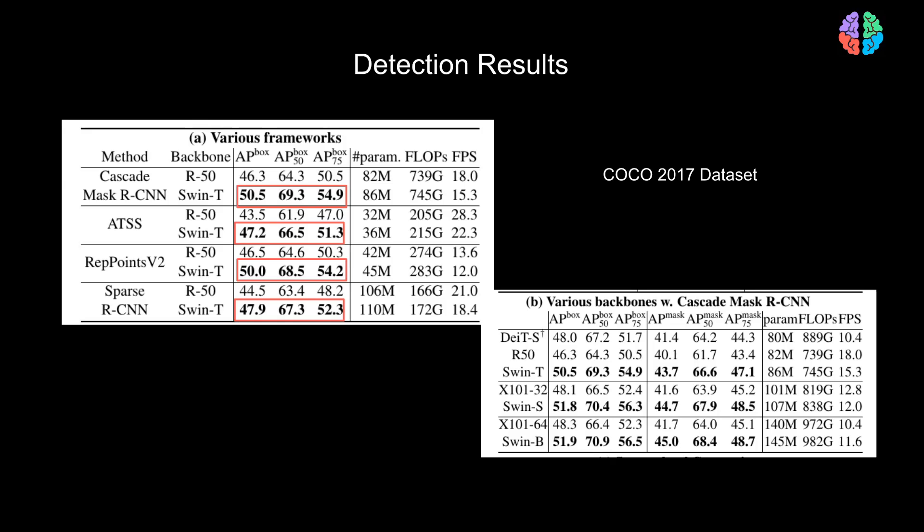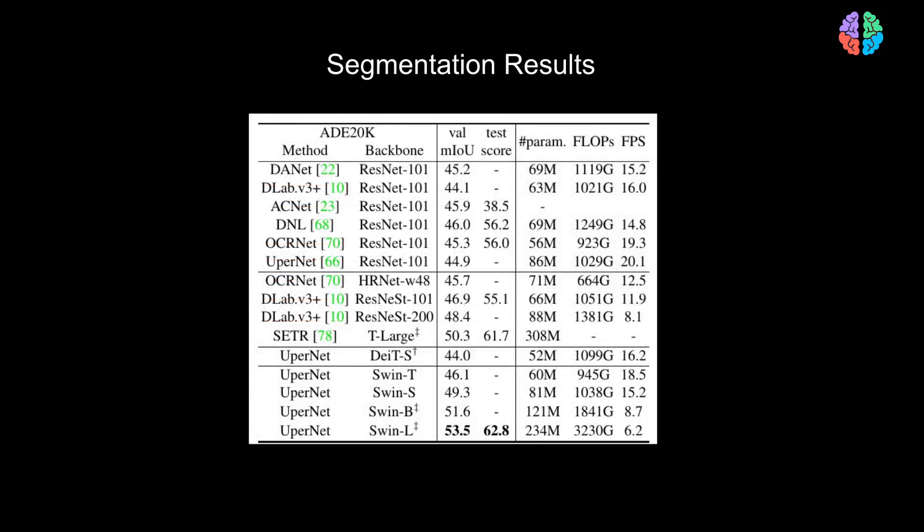Next comes the segmentation results. They show results on the widely used ADE-20K dataset, which has about 150 semantic categories. Once again, we can notice that using Swin Transformer as the backbone does better when combined with the ResNet-101 or DeiT, thereby showing a huge promise as a standard backbone architecture.